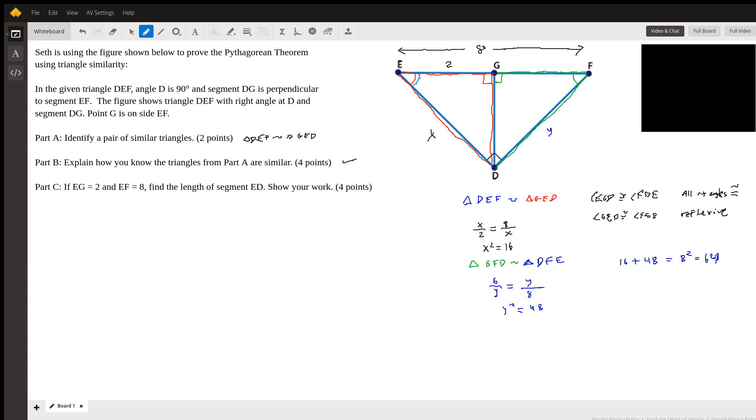I have to admit I've never proved the Pythagorean theorem this way. There are something like more than a hundred different ways to prove the Pythagorean theorem, it being the most famous theorem in geometry. It may be the most famous theorem in math. I hope this was helpful to you, and I'll see you again next time.